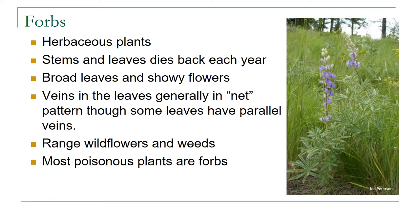Forbs might not be a common term, but you likely know what they are — often the wildflowers on rangeland, and many weeds are forbs. They're herbaceous plants, meaning their stems die back to the ground every year. They have broad leaves, often hand-sized, and showy flowers, since they're pollinated by insects and other pollinators. The veins can vary immensely — many are net-like patterns, some can be parallel. Interestingly, forbs often defend themselves from herbivory through toxins, so many poisonous plants on rangelands are forbs.